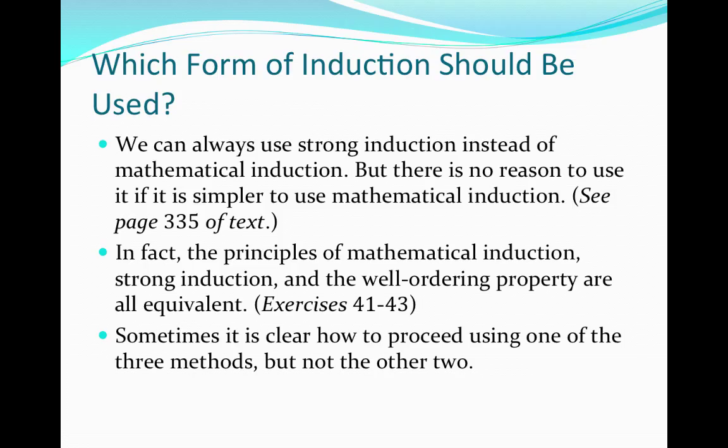For example, consider proving a recurrence relation — in particular, the Fibonacci sequence. The recursive relationship for the Fibonacci sequence requires that we sum the previous two terms of the sequence together. This means we need the closed formula for the recurrence relation to hold for the two previous terms in order to find the next one. We can't simply look at the previous term and apply the formula, because we also need to know what happens to the term prior to that. That's why we need this stronger induction hypothesis. In class, we'll look at specific examples of applying strong induction versus mathematical induction so it will become clearer.